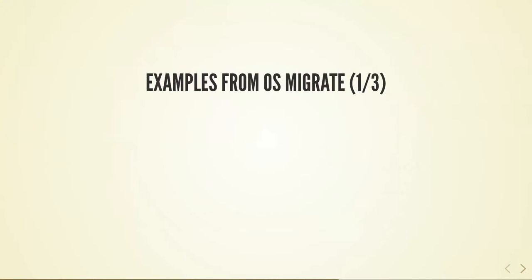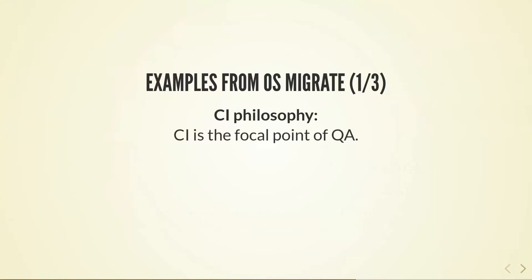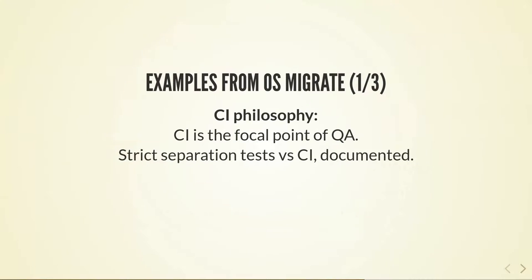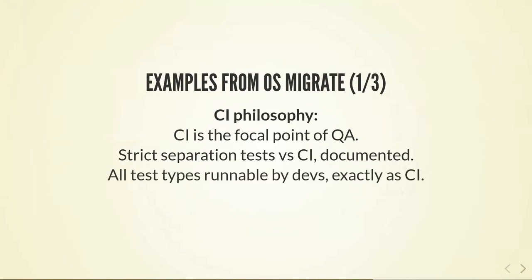Some examples of this pursuit of efficiency that we do in OS Migrate: our CI philosophy is that CI is the focal point of QA for us. We've automated all testing that we possibly can, and there's a strict separation between the tests and CI. The interface is documented very well, and what that gives us is that all test types are runnable by developers exactly as in CI. If a developer wanted, they could set up their own CI based on the documentation of those interfaces.